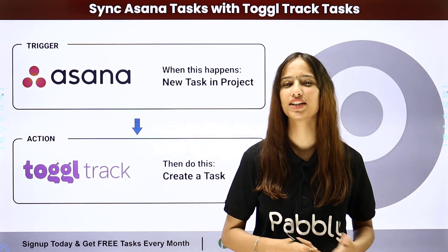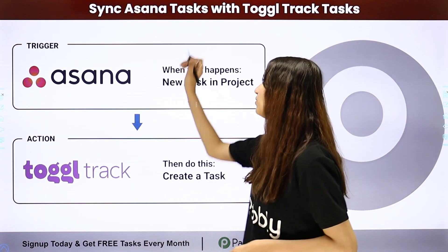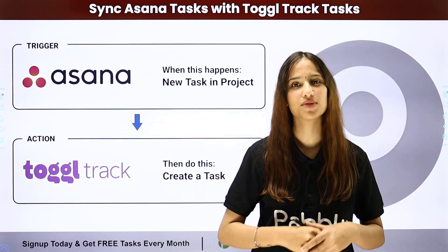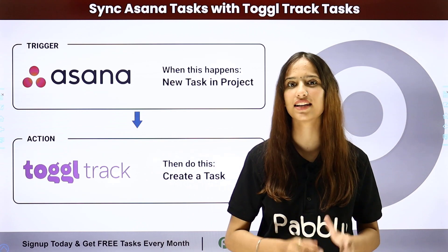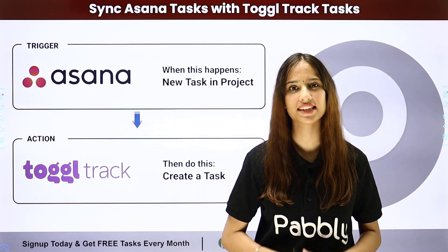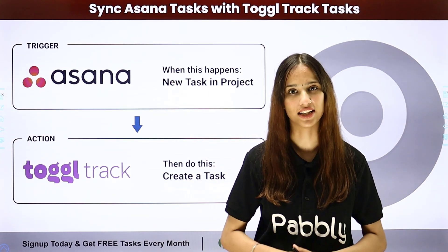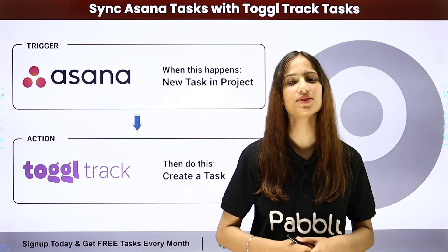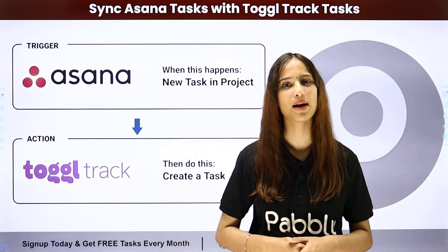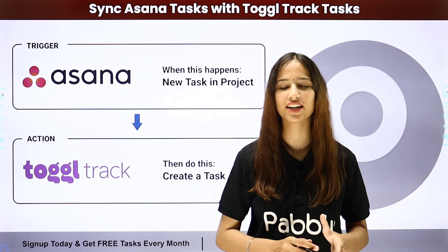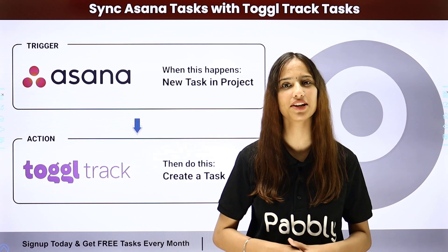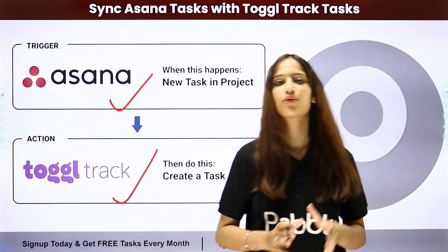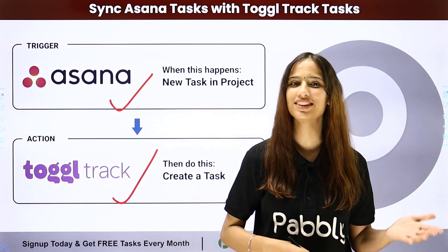Hello everyone, welcome back to Pabbly. In today's video we are going to understand how to sync Asana tasks with Toggl Track tasks. My objective is that whenever I create a new task in Asana, I want to create the same task in Toggl Track as well. To do this, I need to build a connection between these two applications using Pabbly Connect. Here my trigger application will be Asana and my action application will be Toggl Track.